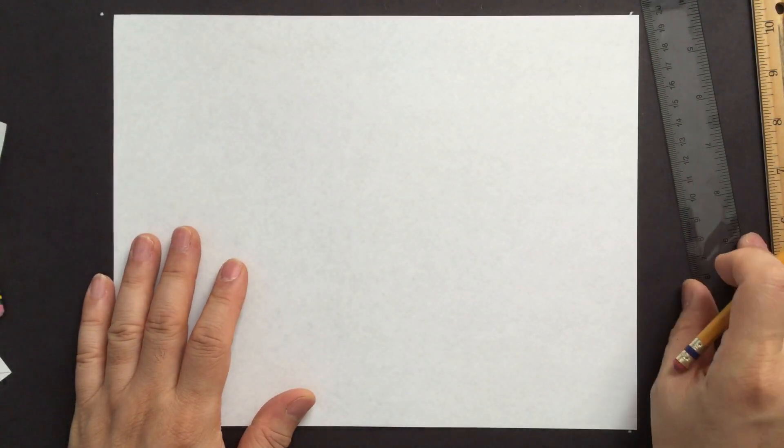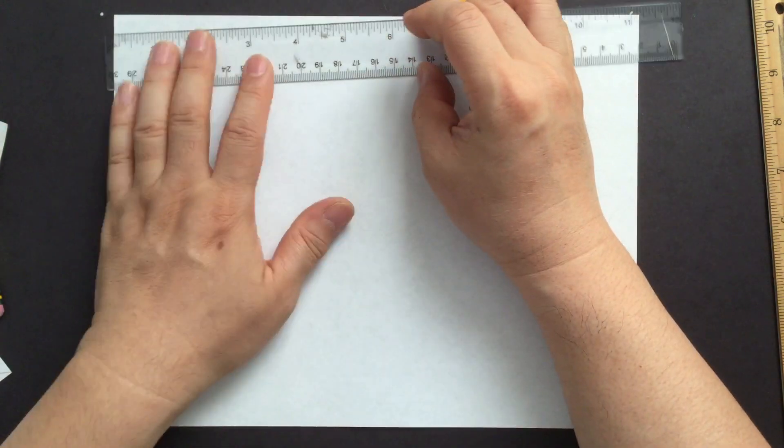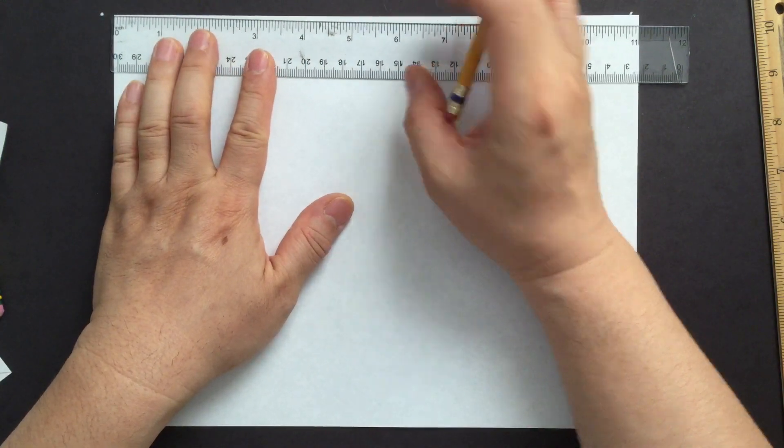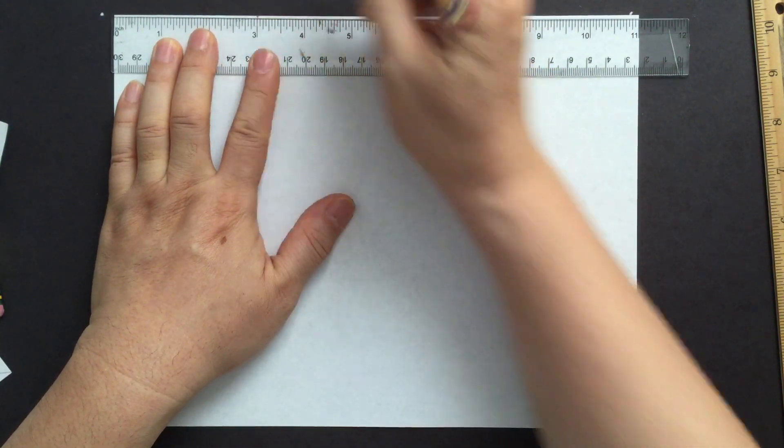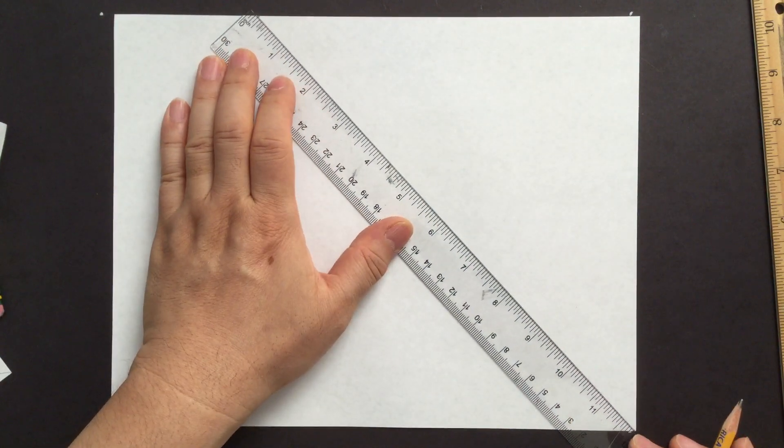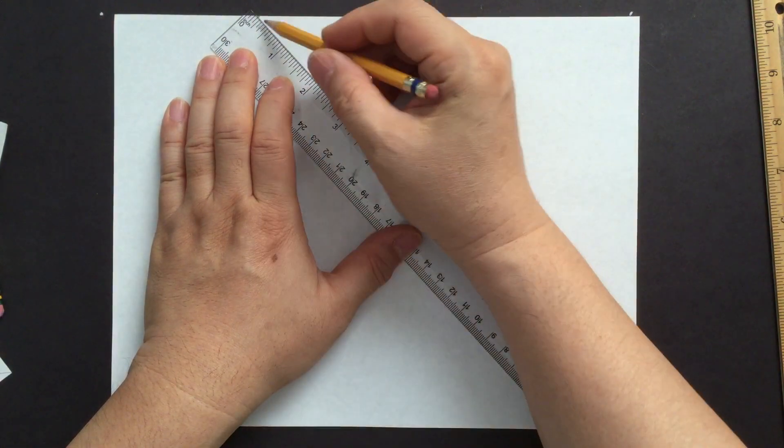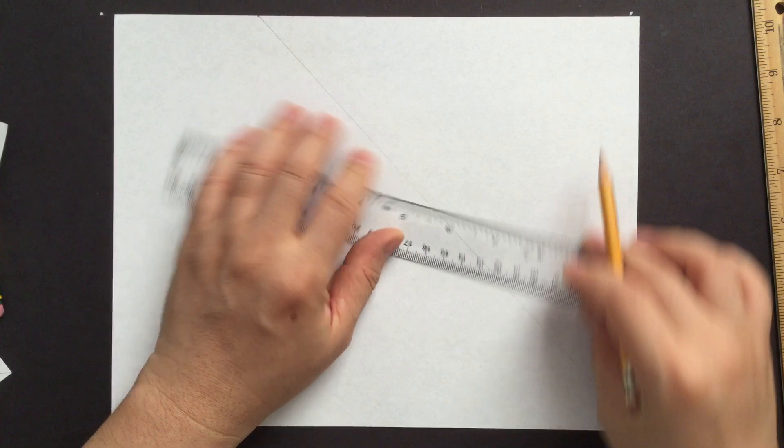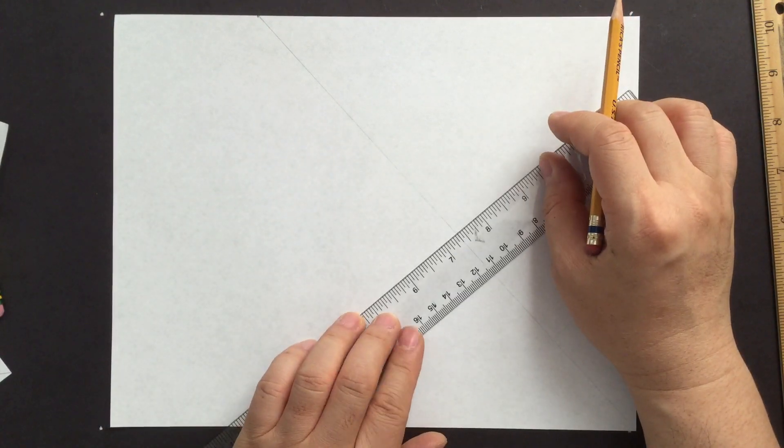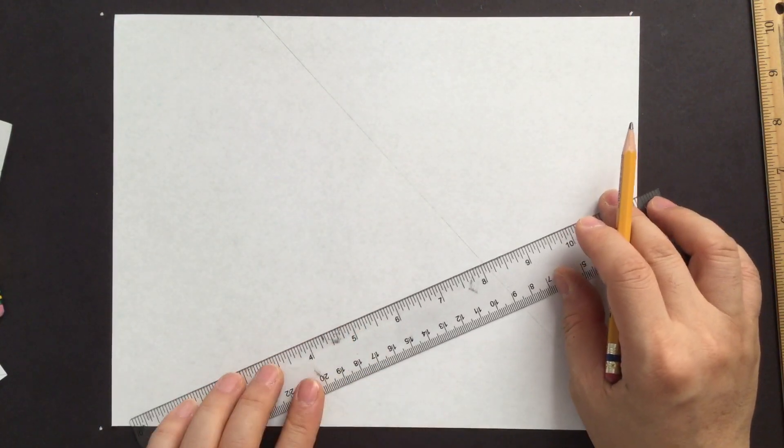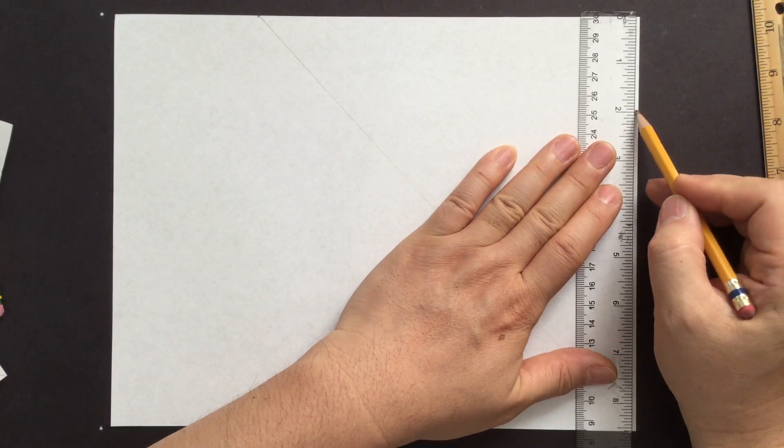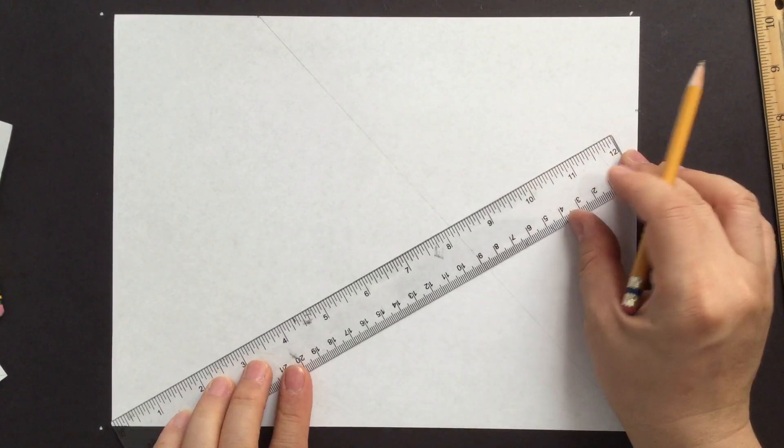And then what if you want to create a 45 degree, then just on the top go about three inches and then connect. So it's not exactly 45. But that will do the job. Same thing. So in here, remember the two inches.